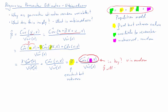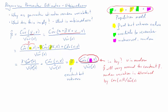Beta hat will actually be different to beta — it will vary around beta. The difference between beta hat and beta is determined by the covariance between u and x over the variance of x. This will vary across samples, as we will see when we look at some simulation code.